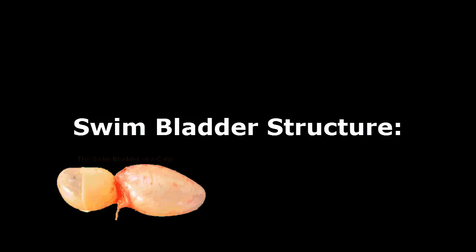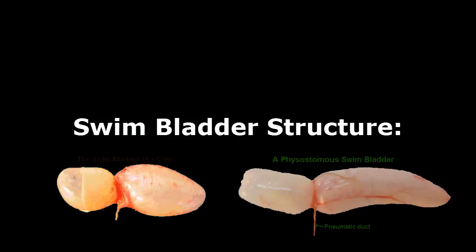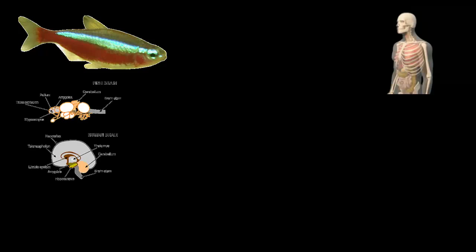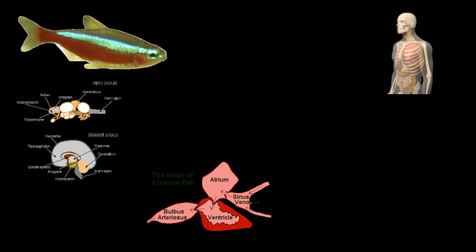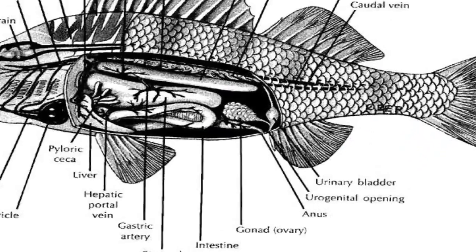Some fish even have what is called a physostomous swim bladder, which basically means that the fish can fill up the swim bladder by gulping air from the surface and then remove it again in a similar manner. While fish have a lot of other organs, they do have similar organs to us, like the brain, the heart, the eyes, the liver, and the intestines.